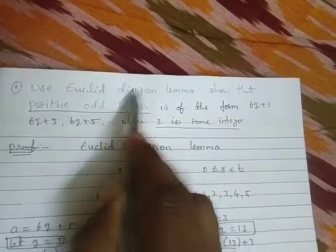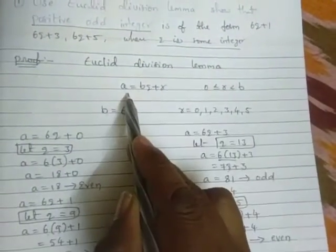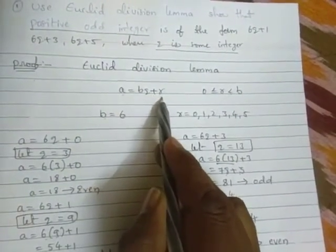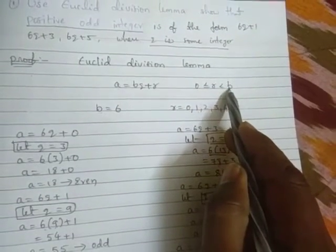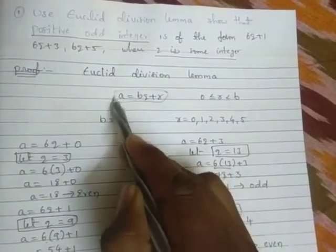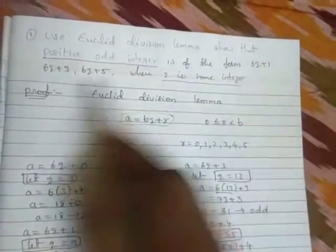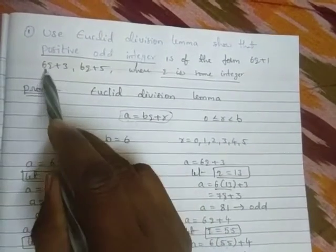Use Euclid Division Lemma. The formula is a = bq + r where 0 ≤ r < b. Now compare with the formula in the question. What is there in the question? 6q+1, 6q+3, 6q+5. This is the divisor, always in front of q. Then b = 6.